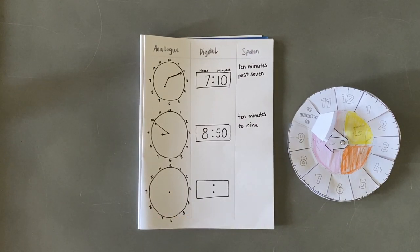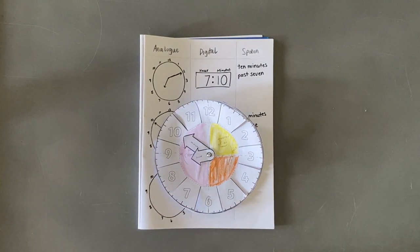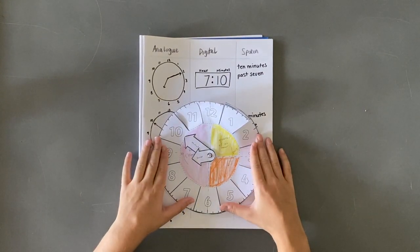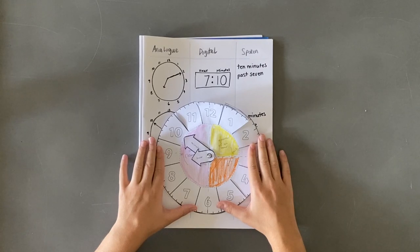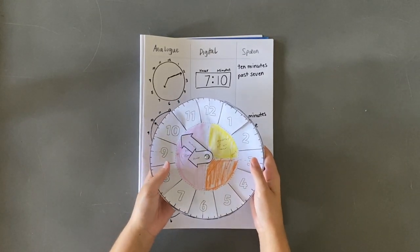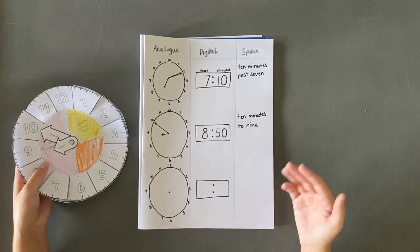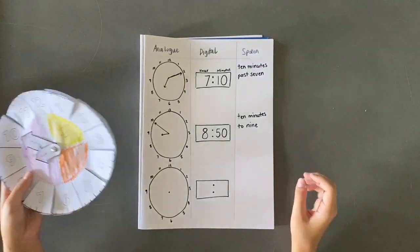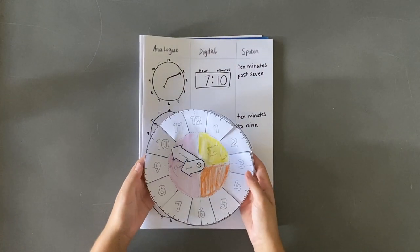For the last one, you're going to have a go on your own. I'm going to give you the time on the analogue clock, and then I want you to do the digital and spoken on your own. You'll need to pause the video. The time I want you to make on your analogue clock is 7:25. Pause the video, find 7:25 on your analogue clock, complete the three steps, then resume to listen to the answers.